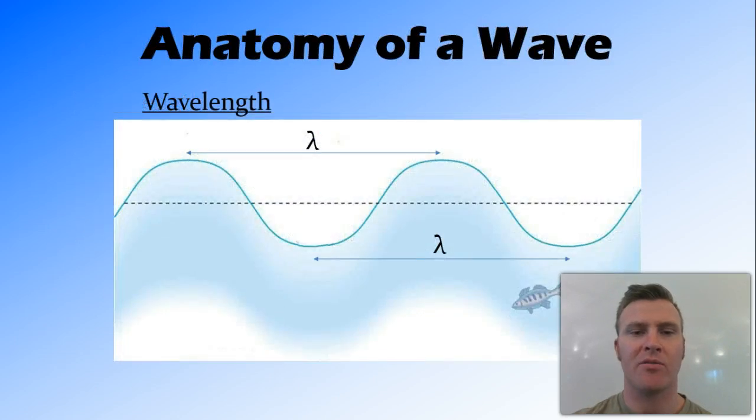So we can see here, if we measure from crest to crest, we have the wavelength there, the lambda. And if we measure from trough to trough, we get another wavelength, both of these being the same size.